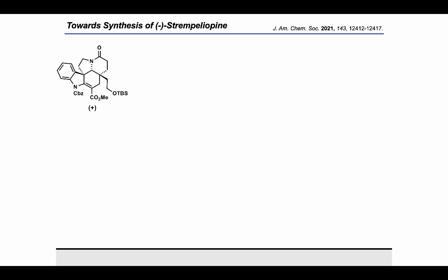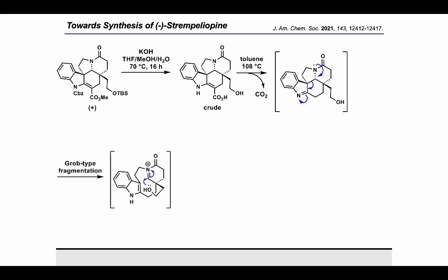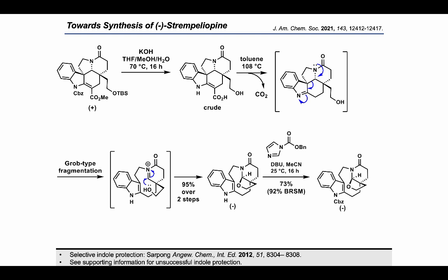With these lessons in mind, we synthesized our desired anol acetal substrate. Using the enantioenriched intermediate, we subjected it to potassium hydroxide in THF/methanol/water at 70°C for 16 hours, which gave the desired carboxylic acid with simultaneous cleavage of both the carbamate and TBS ether. This intermediate was used crude and was heated in toluene at 108°C, affecting a decarboxylation to give the corresponding indolenium, which in the same pot underwent Grob-type fragmentation to give a transient acyliminium species that was then successfully captured by the pendant primary alcohol to give the desired anol acetal in 95% yield over two steps. Protection of this indole using CBZ-imidazole in the presence of DBU gave the desired carbamate in 73% yield.